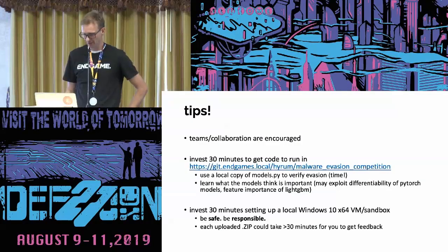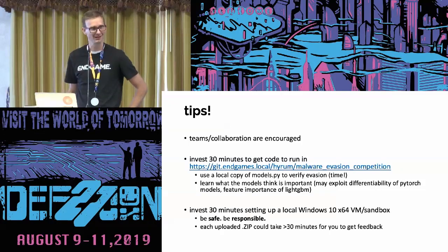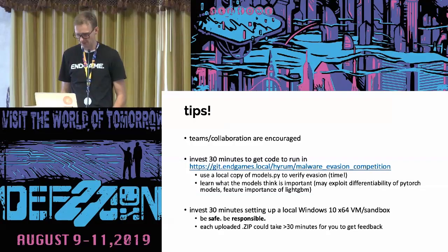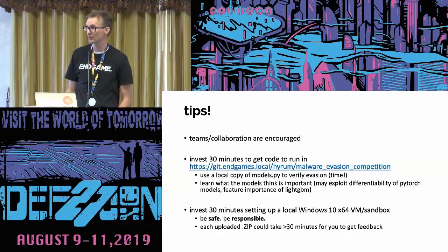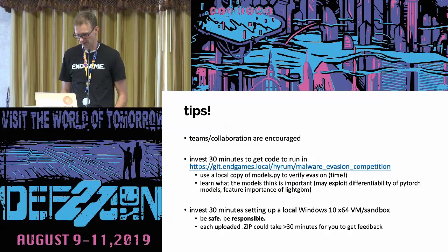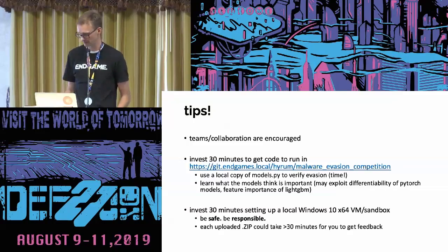A few more tips: we hope you form teams and collaborate, but there's just one GPU so you'd have to decide how to divvy it up. Please invest 30 minutes in checking out the code, the model, and the inference code and getting it to run locally — it will save you a ton of time to not rely on submitting things to the service. Also invest 30 minutes in setting up a local Windows 10 64-bit VM, which is the environment we'll use to check the functionality of your submitted samples. Be safe and responsible — don't connect your VM to the internet. When you do upload, it could take up to 30 minutes to validate the full suite of samples.